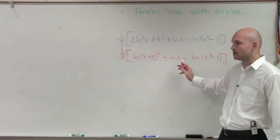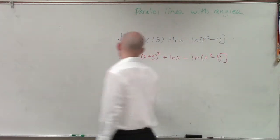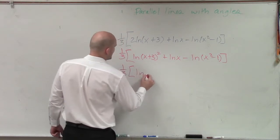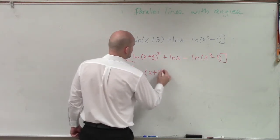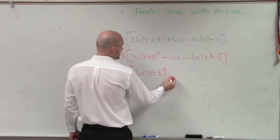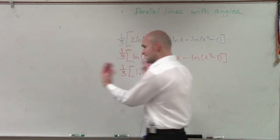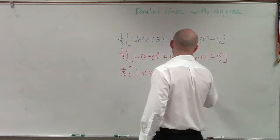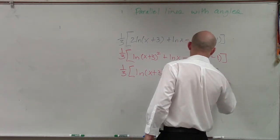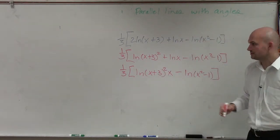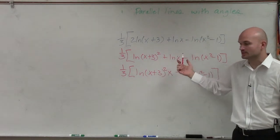This I know is a multiplication, so it's one-third ln of (x plus 3) squared times x, because you now combine them, minus ln of (x squared minus 1). So I just did these. I combined these to one single logarithm.